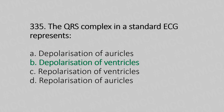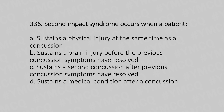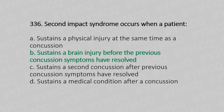Question number 336: Second impact syndrome occurs when a patient — option A: sustains a physical injury at the same time as a condition. Option B: sustains a brain injury after previous condition symptoms have not yet resolved. Option C: sustains a second condition after previous condition symptoms have resolved. Option D: sustains a medical condition after a prior condition. The answer is option B, sustains a brain injury before previous condition symptoms have resolved.